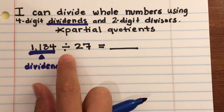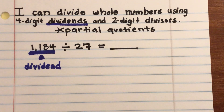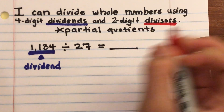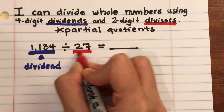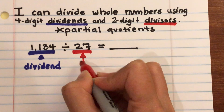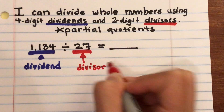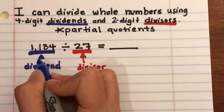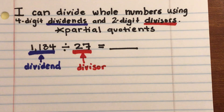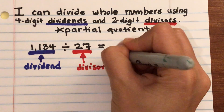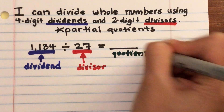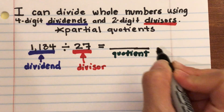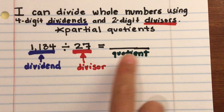The first number is the dividend; divided by the second number, which is the divisor. Again, it doesn't always have to be the smaller number, but typically in K through 5 the second number is smaller. Your answer is going to be the quotient. Those are three really important terms: dividend, divisor, and quotient.